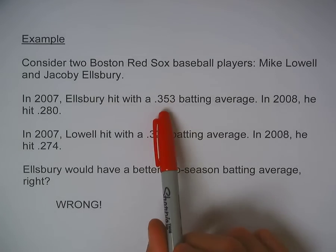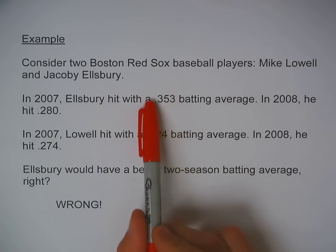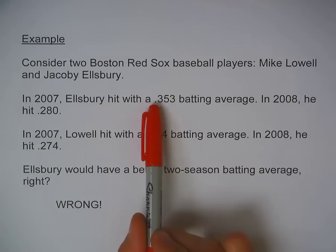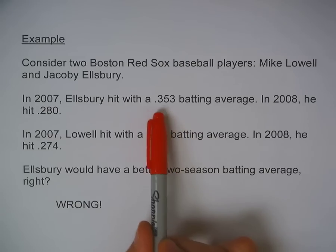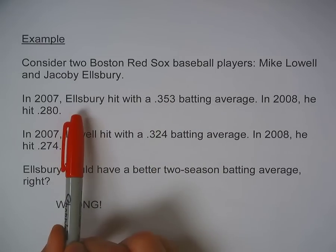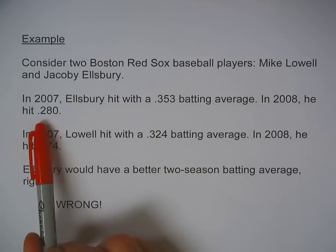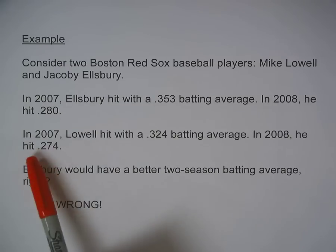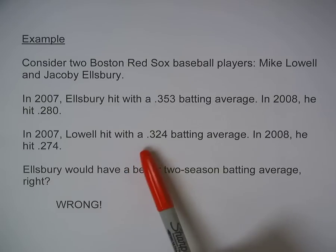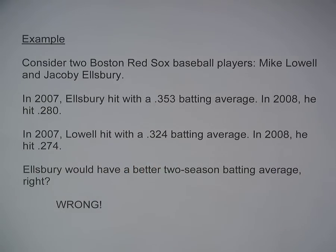If you're not familiar with baseball, batting average means that — converting to a percent — that would be 35.3%, meaning that in 35.3% of Ellsbury's at-bats he ended up getting a hit. Then in 2008, he hit .280, so 28% of his at-bats he got on base. In the same years, Lowell in 2007 hit with a .324 batting average, and in 2008 he hit .274.